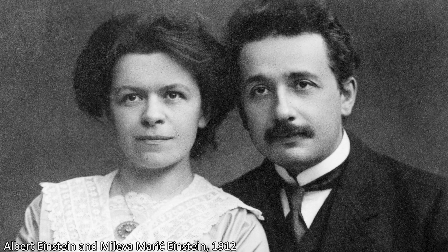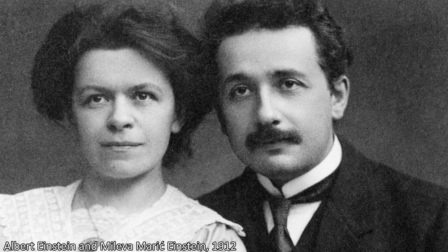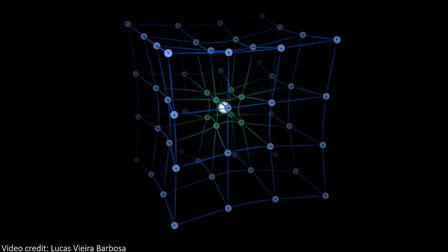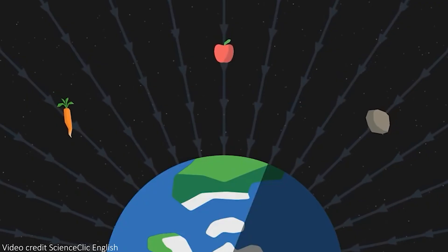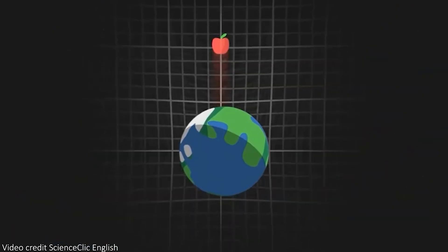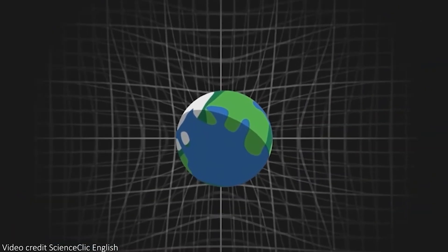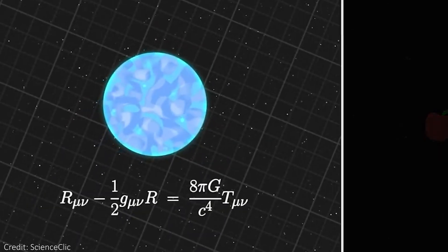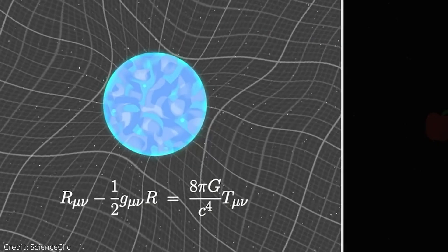Albert Einstein was one of the most accomplished and celebrated scientists in all of history, and he gave us one of the most important theories of the world around us: general relativity. This theory explains how gravity works in a way that had never been seen before. It has passed practically every test it's ever been put through, and remains at the forefront of scientific research. It's still the best theory of gravity that we have, and is one of the most beautiful descriptions of how the universe works that we've ever developed.